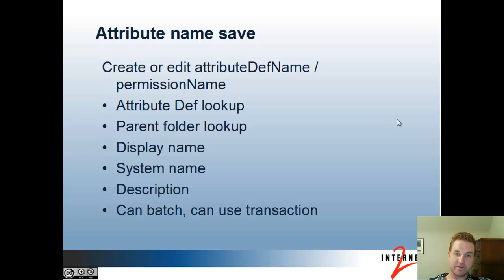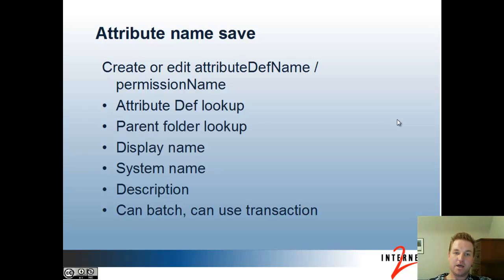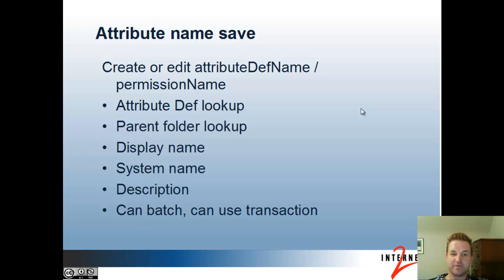Attribute Name Save web service operation will create or edit attribute def names. Permission names are also attribute definition names. So if your application is dynamic and using attributes or permissions, when someone creates a resource you'll need to create a permission resource or attribute definition name. You pass in the attribute definition lookup (name or UUID), the parent folder, display name, system name, description, etc. You can batch those operations and use a transaction if you want, or send one at a time.